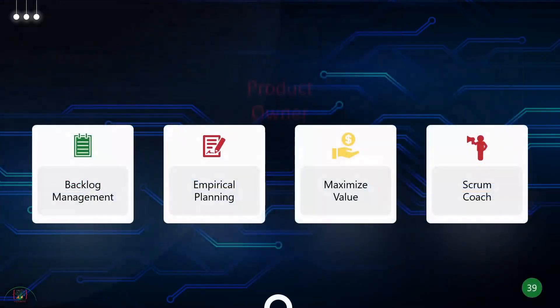Let's talk about the first role: the Product Owner. Who is the Product Owner? They have a big responsibility. They will gather requirements from business owners and stakeholders. They will break down large requirements into smaller requirements in the form of user stories. They will add user stories to a product backlog, and the Product Owner should be the single point of contact for all the requirements.